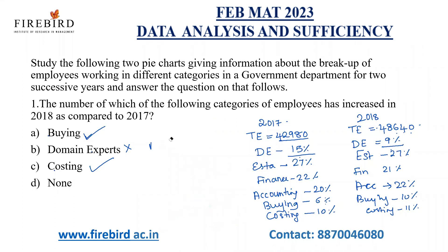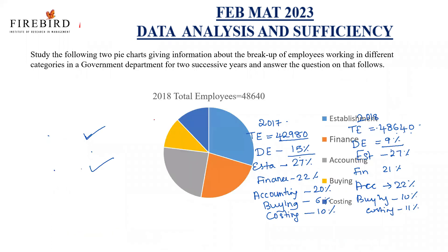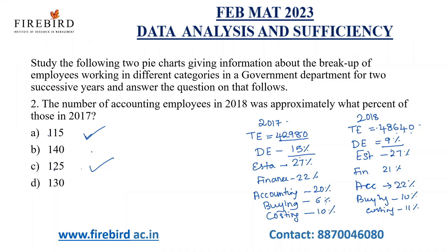Let us keep the table as it is for comparison and move to the next question. The question asks: the number of accounting employees in 2018 was approximately what percent of those in 2017? How many people are there in accounting in 2018? Accounting in 2018 is 22% of 48,600. That is 4,864 into 2 = 9,728, plus an additional 2% gives approximately 10,700 employees in accounting in 2018.